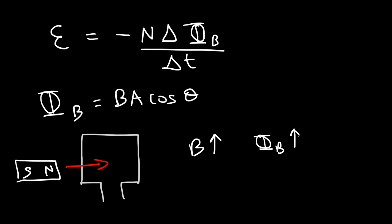If the magnet is held in place, no induced current flows because there's no change in magnetic flux. But as the magnet moves either into or out of the coil, there is a change in the magnetic field, which leads to a change in the magnetic flux, and therefore an induced EMF that leads to an induced current. We're not going to focus on the direction of the current in this video — just a basic introduction to Faraday's law.